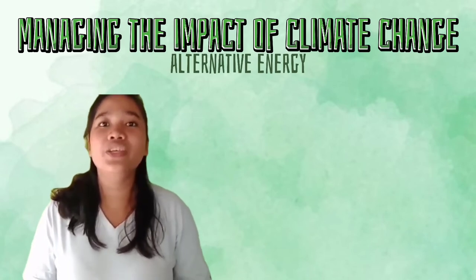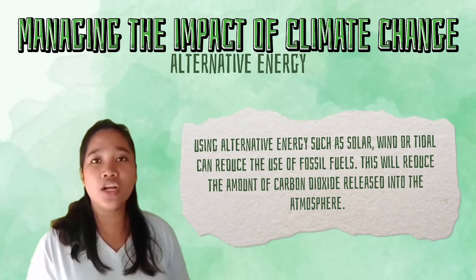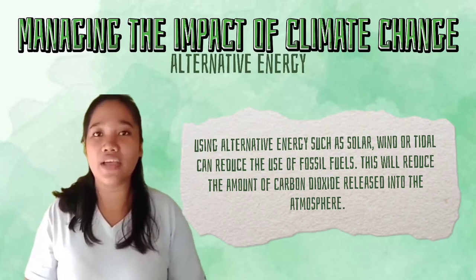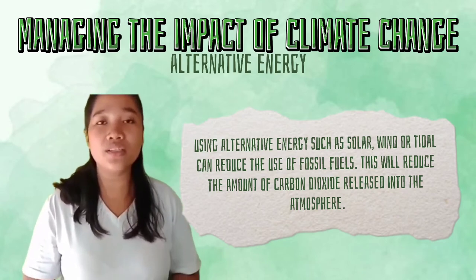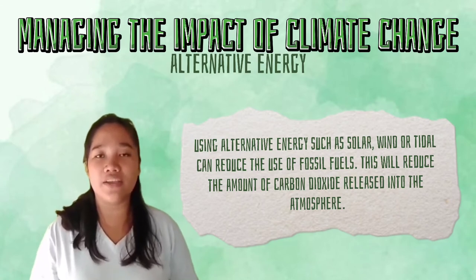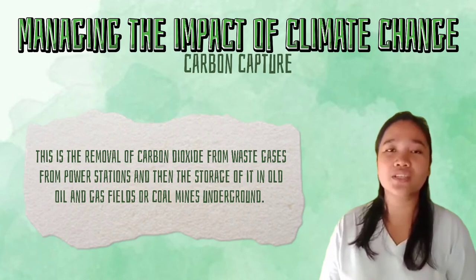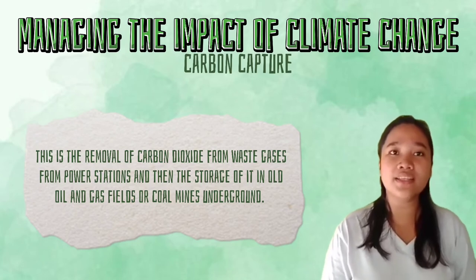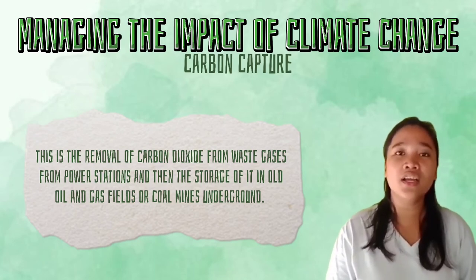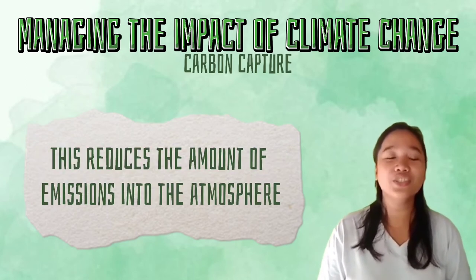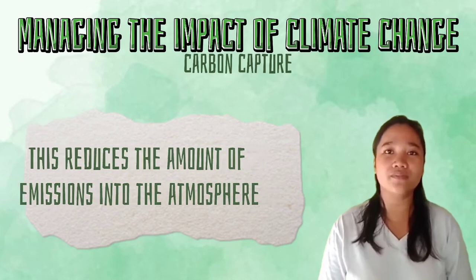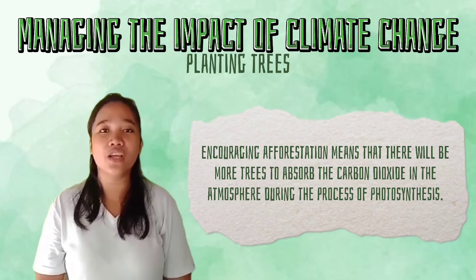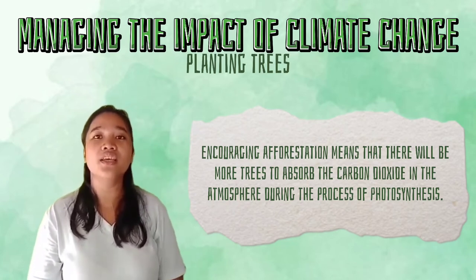Using alternative energy like solar, wind, or tidal energy can reduce the use of fossil fuels, which reduces the amount of carbon dioxide in the atmosphere. Carbon capture means the removal of carbon dioxide from waste gases from power stations and storing it in old oil and gas fields or coal mines underground. Planting trees, or encouraging afforestation, means there will be more trees to absorb carbon dioxide during photosynthesis.